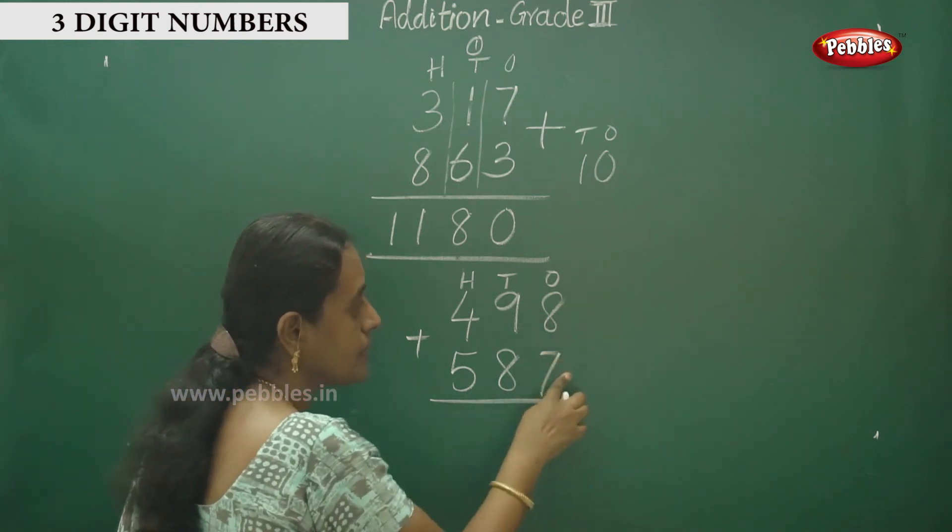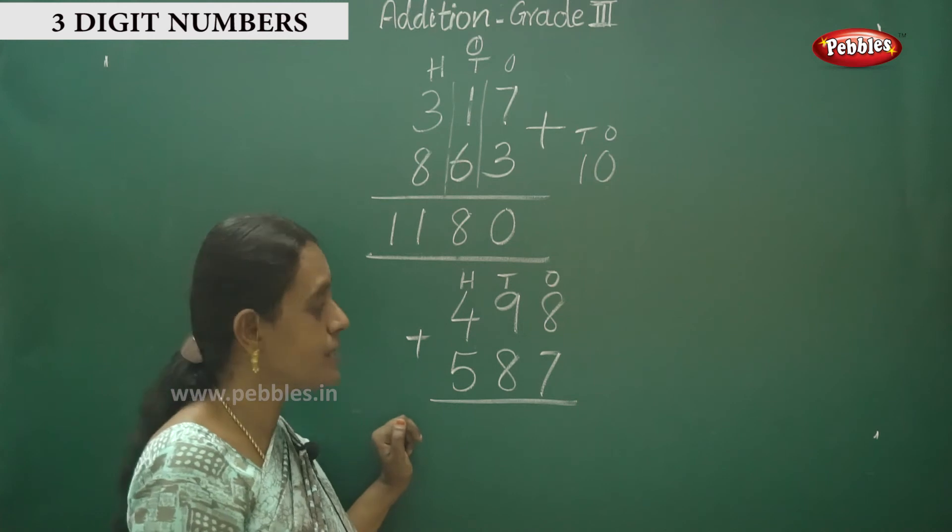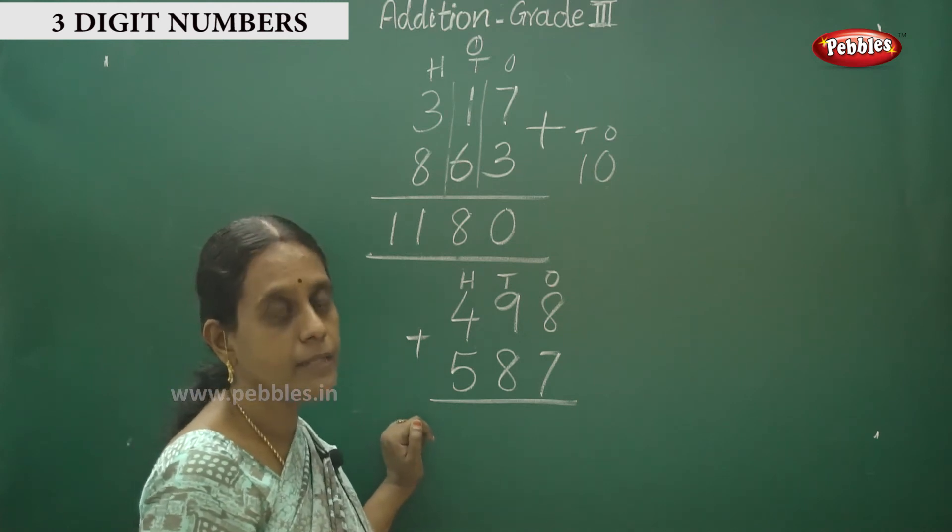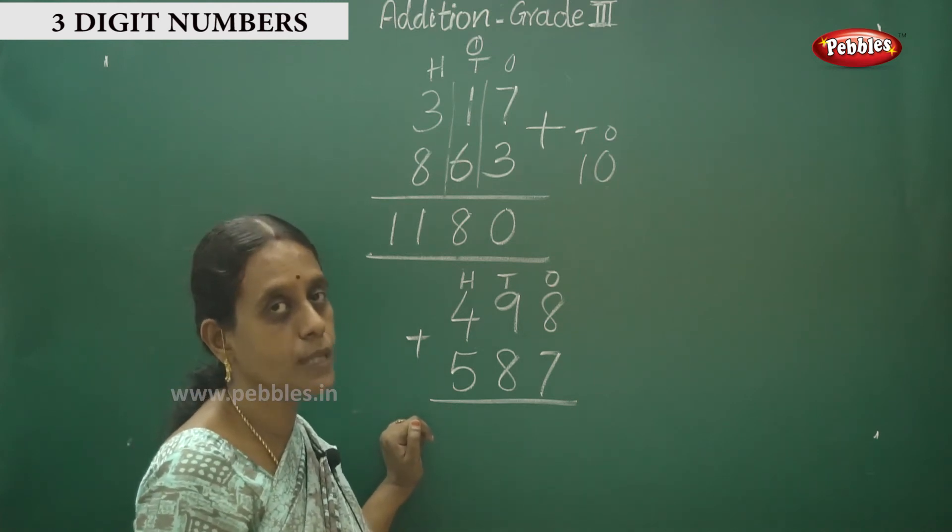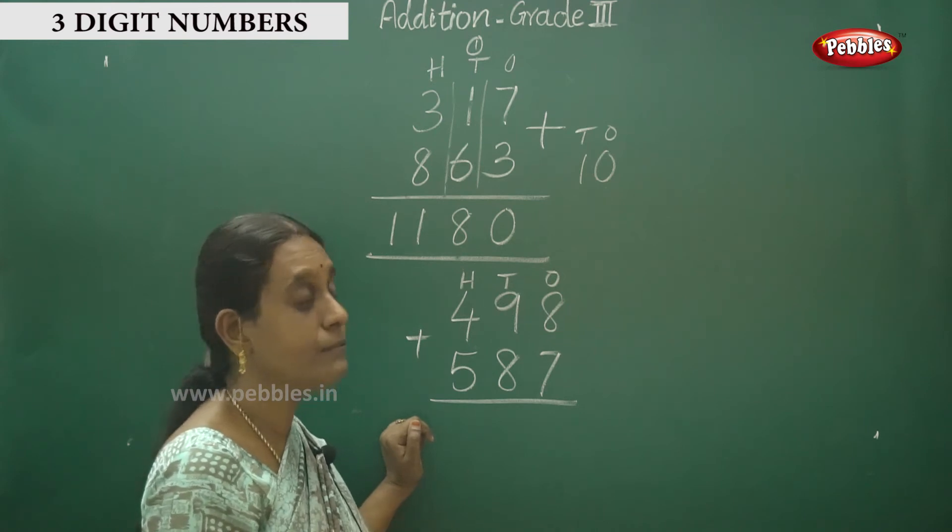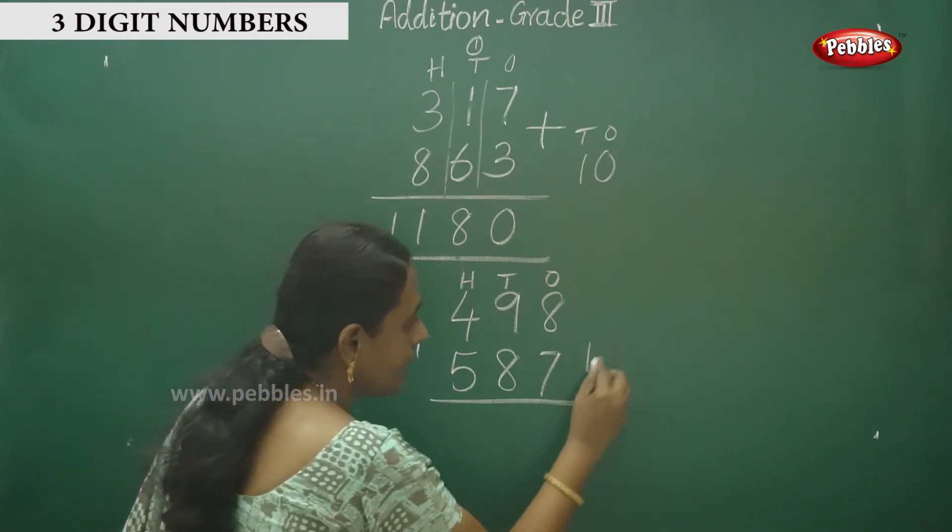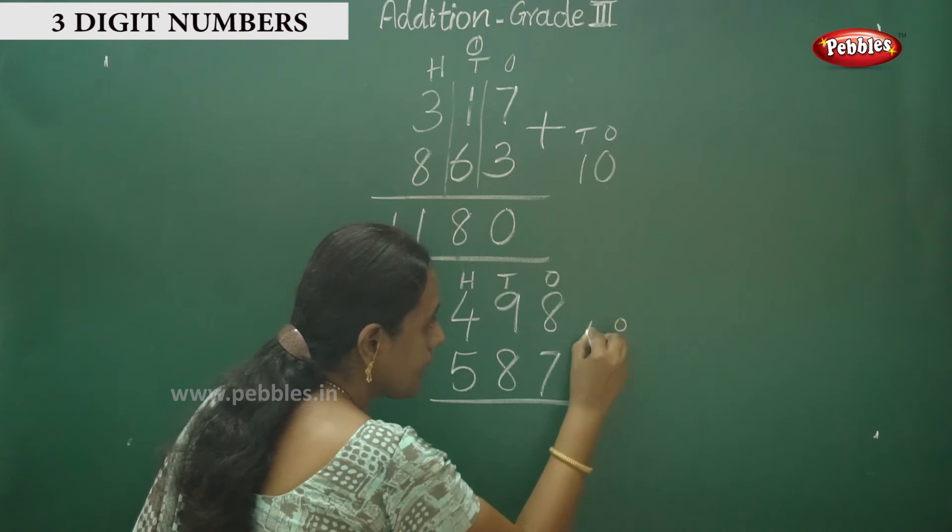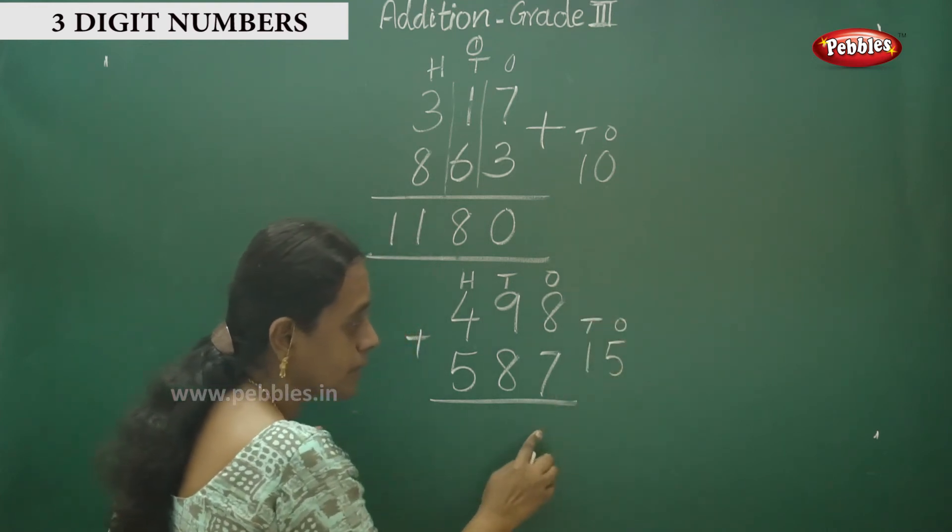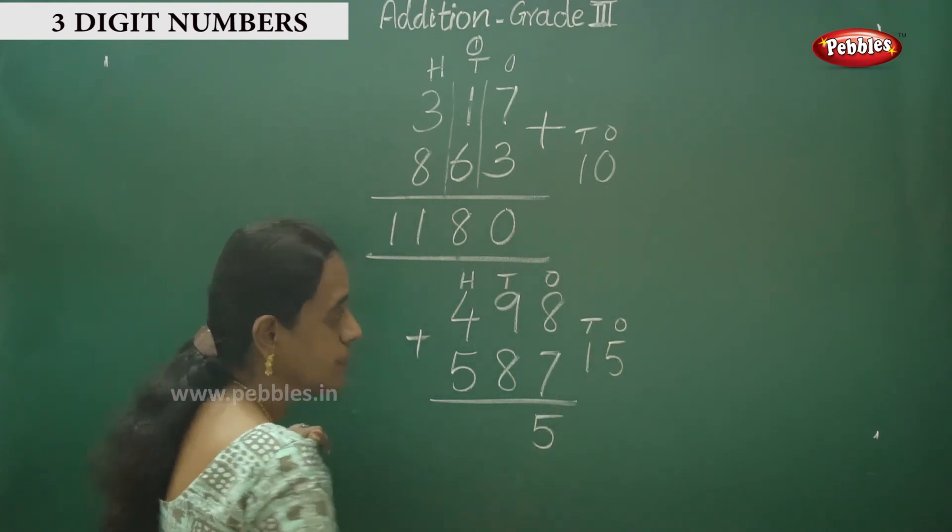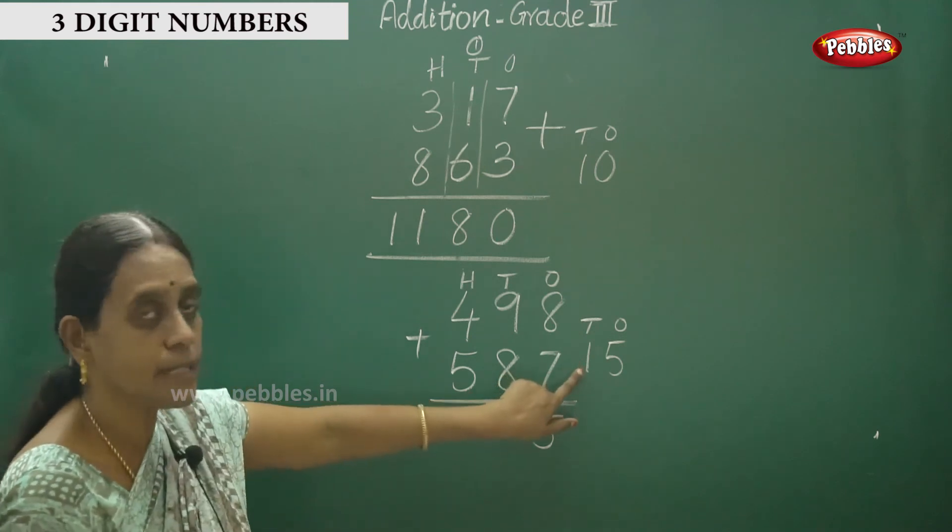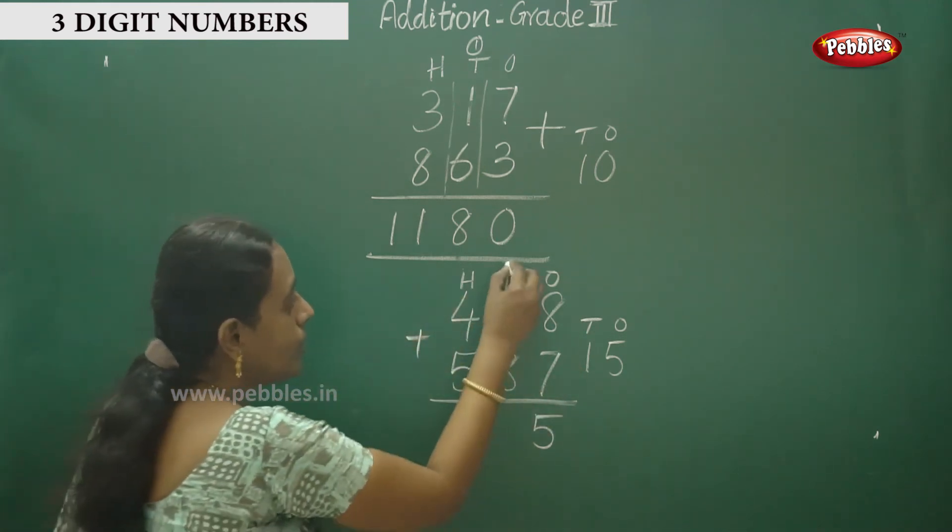Ones place first. Eight in the mind, seven in the finger. Eight after seven: nine, ten, eleven, twelve, thirteen, fourteen, fifteen. So fifteen. Here ones and tens. The ones place number is five. And the tens place number is one, carry over.